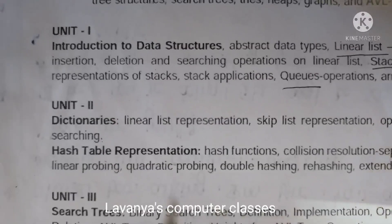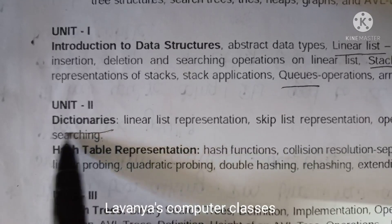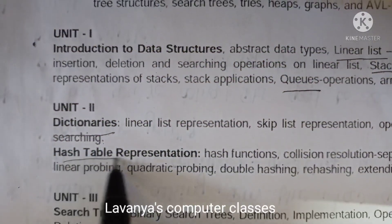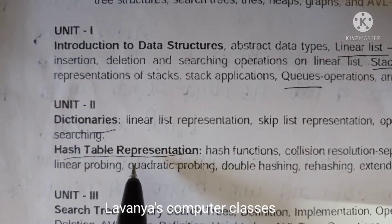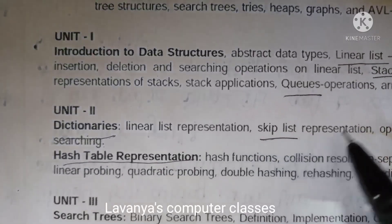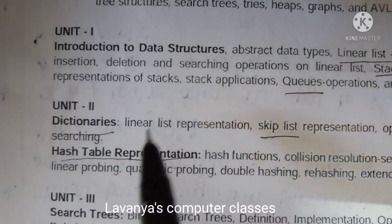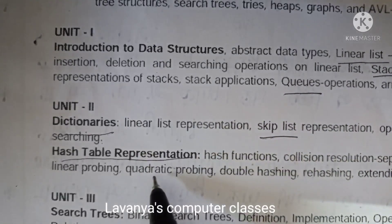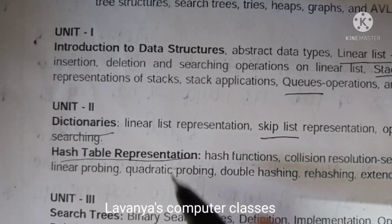If you come to unit 2, it is divided into two chapters: one is dictionaries and second one is hash table representation. Hash table representation is very, very important. Skip list is also there, which is almost all similar to linear list. We are most concentrated in unit 2 on hash table representation. In the next coming session, I will explain what are the important questions in this also.